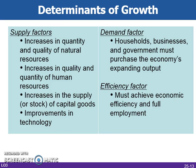Four of the determinants of growth relate to the physical ability of the economy to expand. These supply factors, or changes in the physical and technical agents of production, enable an economy to expand its potential GDP. The fifth determinant of economic growth is the demand factor. To achieve the higher production potential created by the supply factors, households, businesses, and government must purchase the economy's expanding output. The sixth factor, efficiency, involves the issue that the economy must achieve economic efficiency as well as full employment. It must use its resources in the least costly way to provide the specific mix of goods and services that maximizes people's well-being.